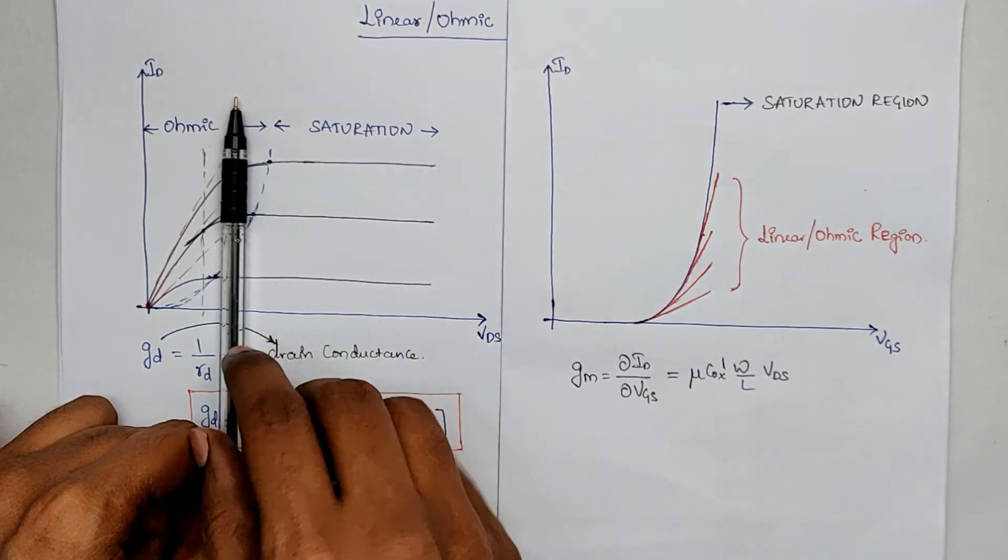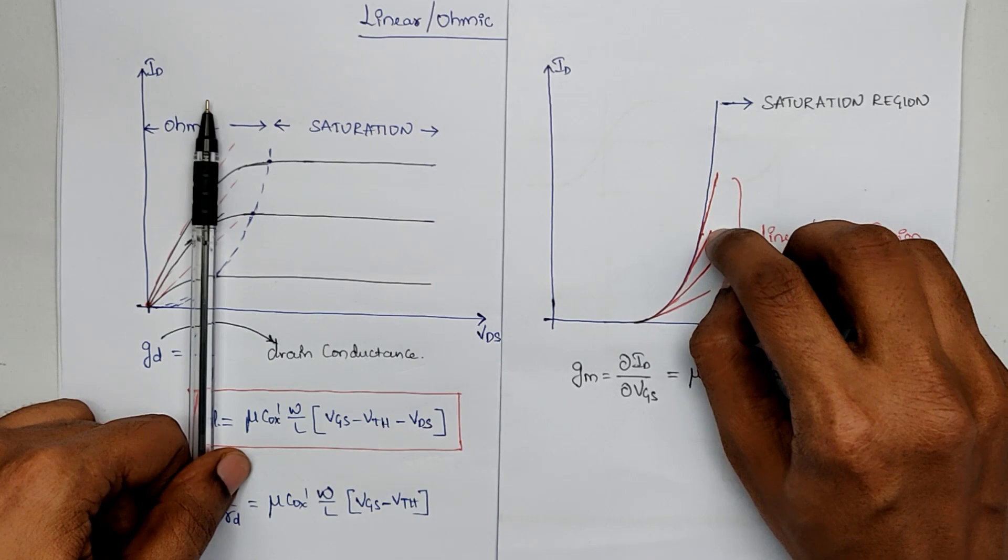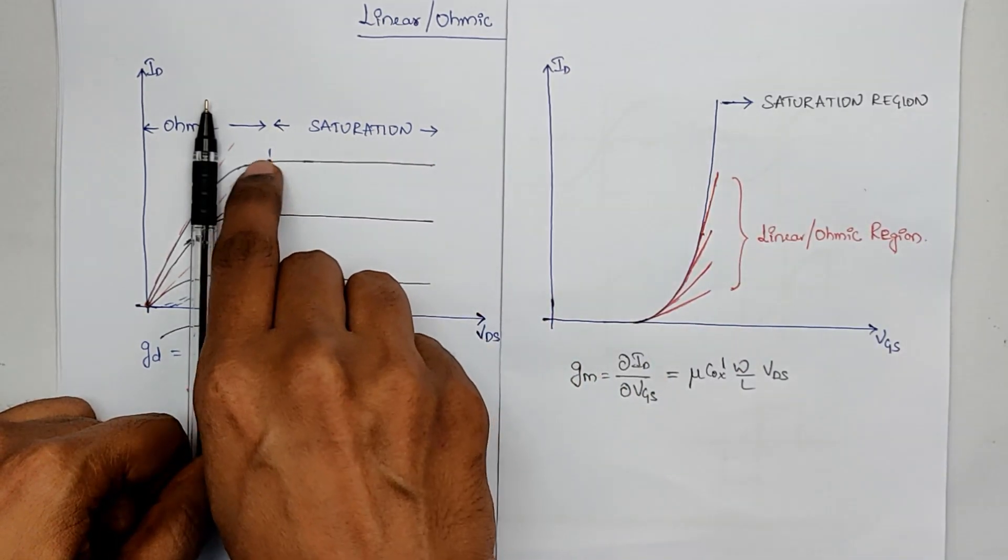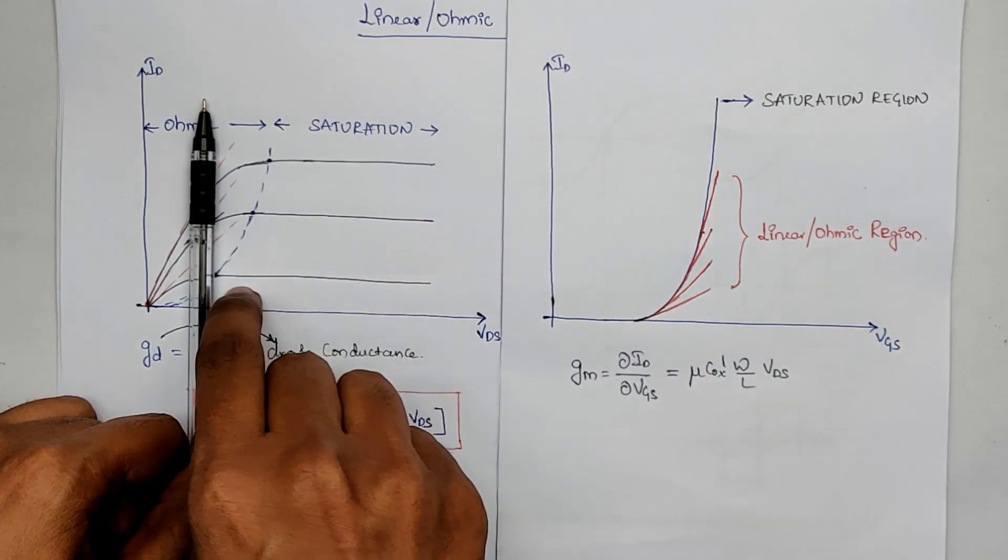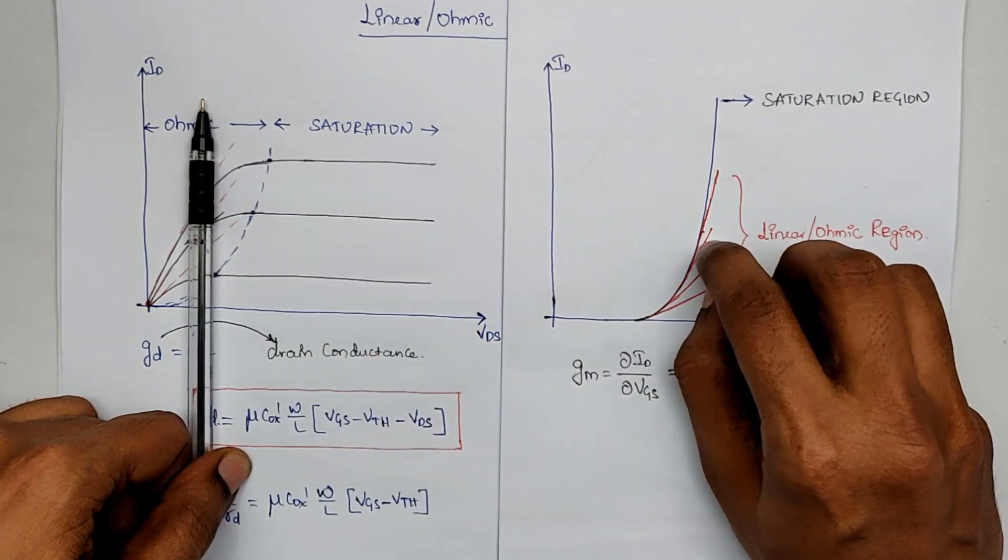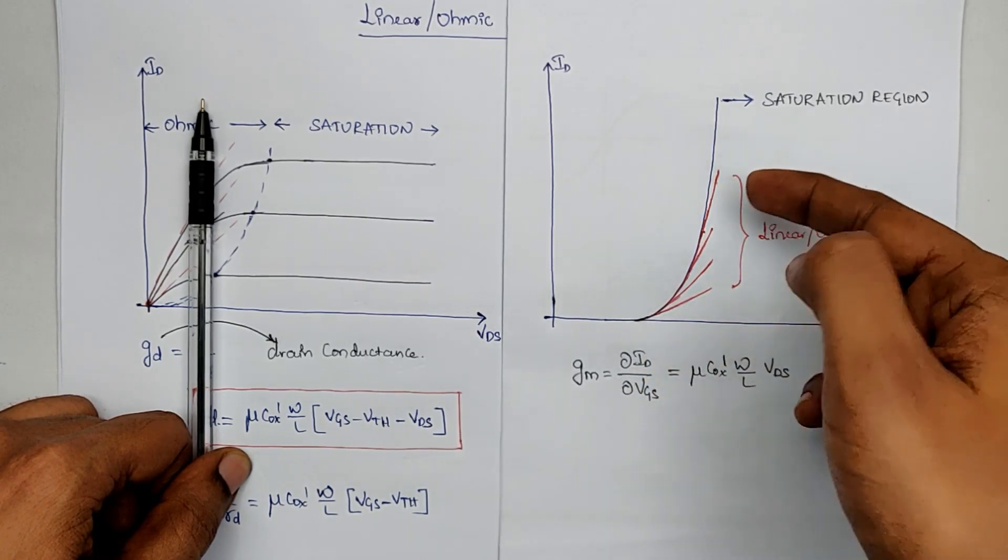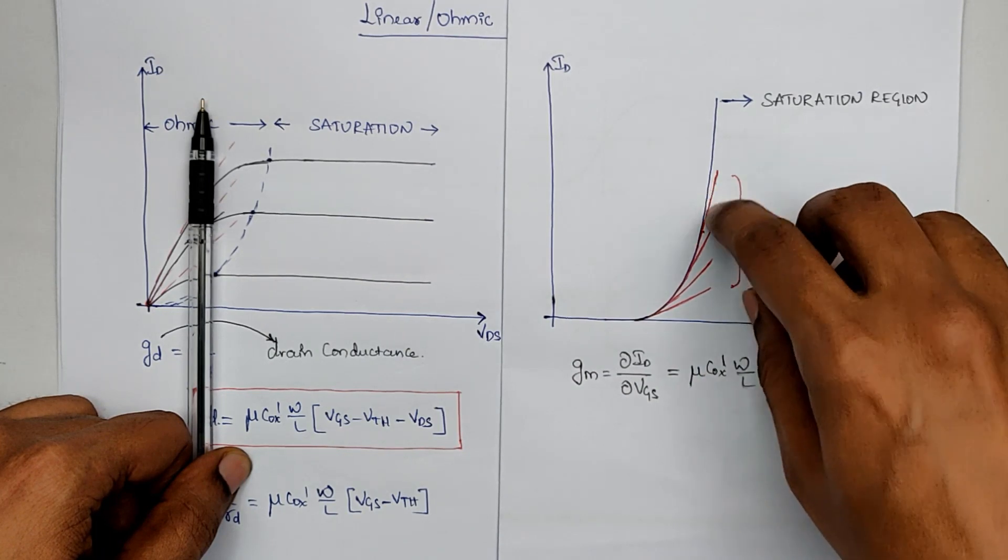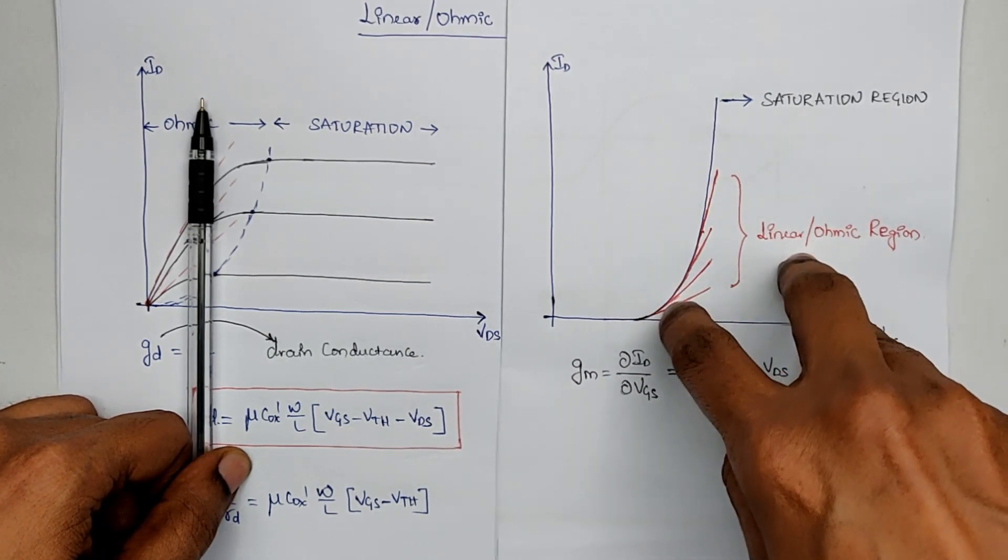If you take a different VDS value, if you move a bit left, then the current would reduce for a given VGS. Let's say for this VGS, the current was here. It reduced. But then still there would be a smaller VGS corresponding ID VDS curve, which would still be in saturation. Hence, this curve would go and merge with this saturation curve at some point. So as we are decreasing VDS, the curve keeps moving downwards. But of course, they all will be merging with the saturation curve at some point.